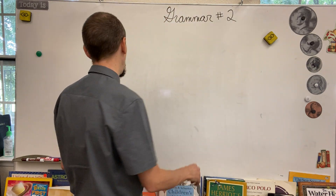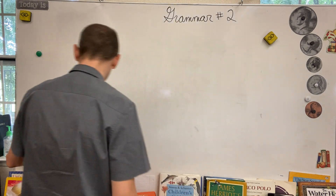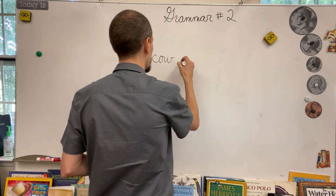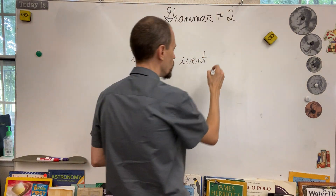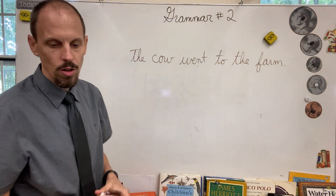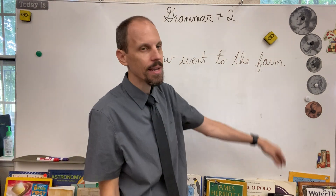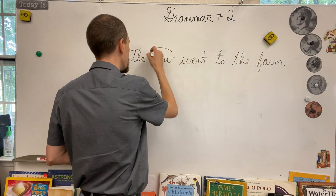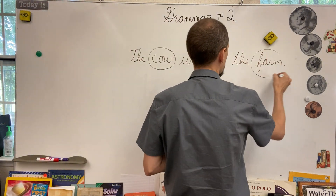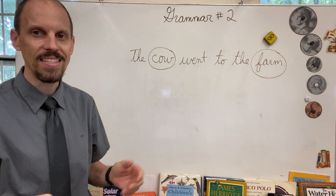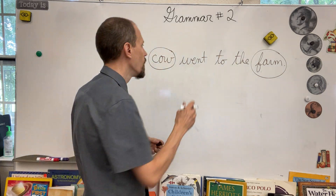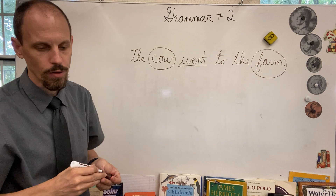Let's look at the very first sentence: 'The cow went to the farm.' Let's find our nouns — circle all the nouns. What in here is a person, place, thing, or idea? A cow is a thing, so we'd circle 'cow.' Is there any place? Yes — a farm is a place, so circle 'farm.' Now, which word shows action? 'Went' shows action, so we're going to underline 'went.' That's what your first sentence should look like.